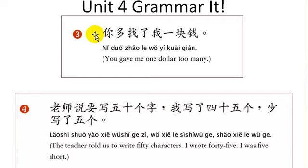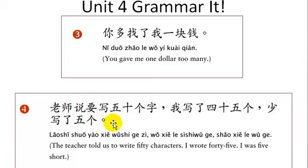你多找了我一块钱 — you gave me one dollar too much. 老师说要写五十个字，我写了四十五个，少写了五个 — the teacher told us to write 50 characters, I wrote 45, I was five short.